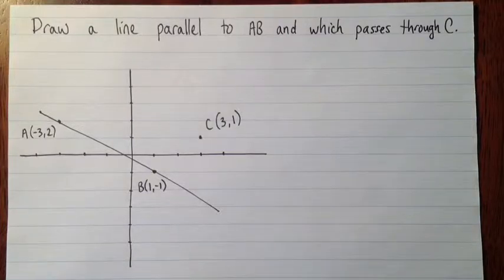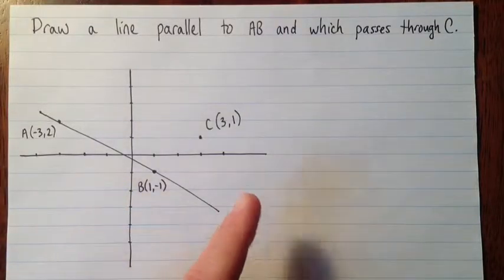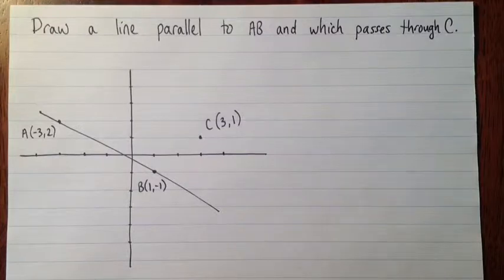It asks us to draw a line parallel to AB that passes through the point C. In the second question, we'll draw a line that's perpendicular. We know that parallel lines have the same slope.